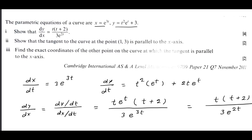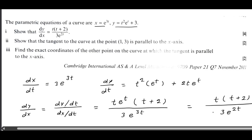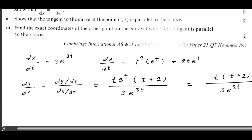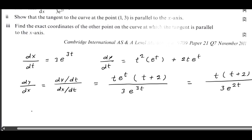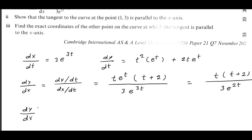Now we have to show that the tangent to the curve at the point (1, 3) is parallel to the x-axis. A tangent is parallel to the x-axis when its slope is 0, because the slope of any line parallel to the x-axis is 0. So we will find dy/dx and calculate its value at the point (1, 3). If this value comes out to be 0, it confirms the tangent is parallel to the x-axis.